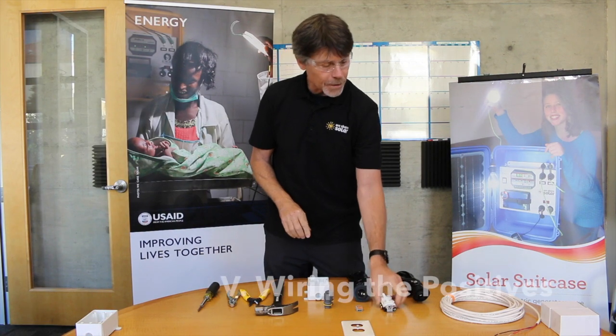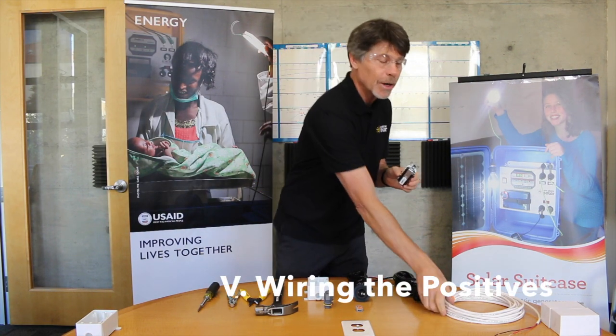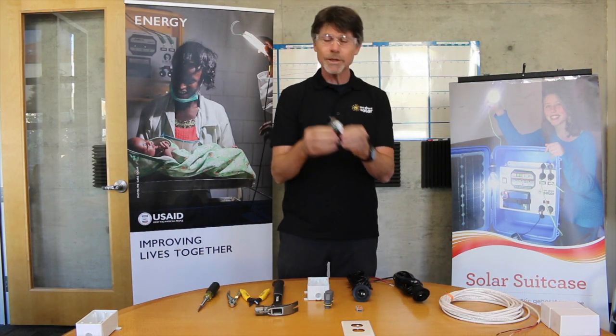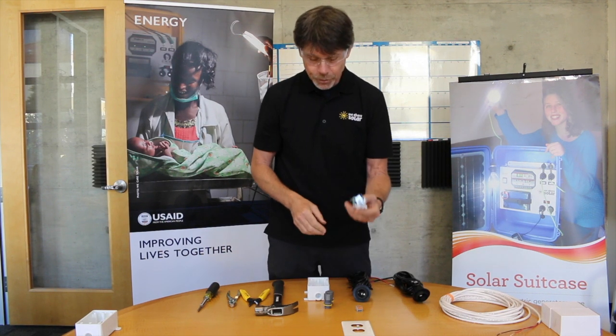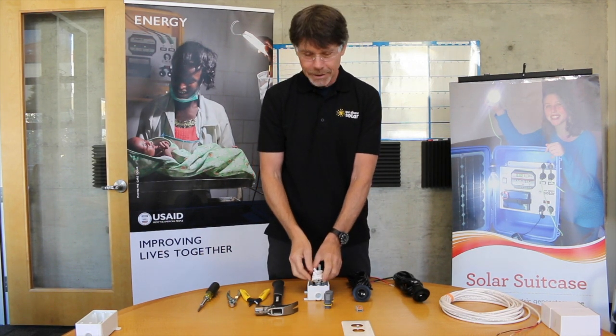Then we'll wire the negatives of the lamp cord to this terminal block. And then we'll wire the positives from the power in and the two lamp cords to the switch so we can control the lights. And then we'll screw the switch back into the box, put on the cover plate, and we'll light the lights.